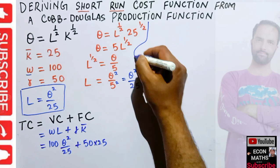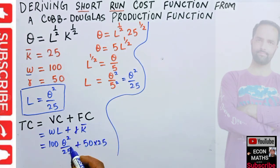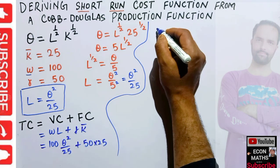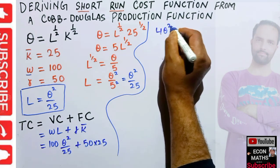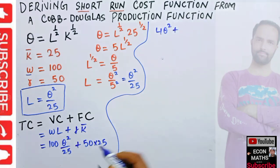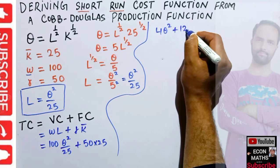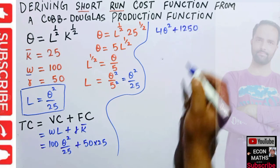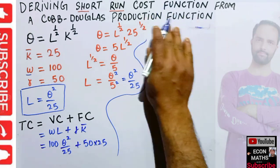Solving this: 100/25 = 4, so the variable part gives 4Q². And 50 times 25 equals 1250. Therefore our total cost function is TC = 4Q² + 1250.